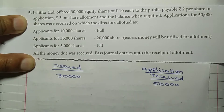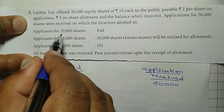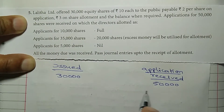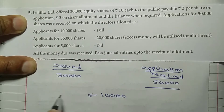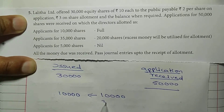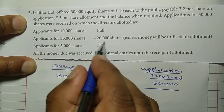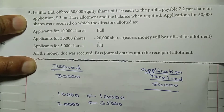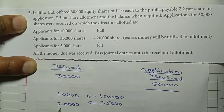So 20,000 shares are excess. What are the directors going to do? Applicants for 10,000 shares are fully accepted. For 35,000 shares applied, only 20,000 shares are allotted. That is called pro-rata allotment.